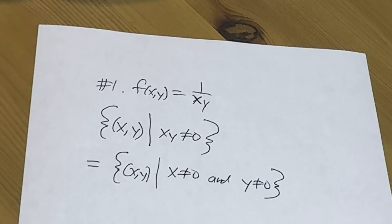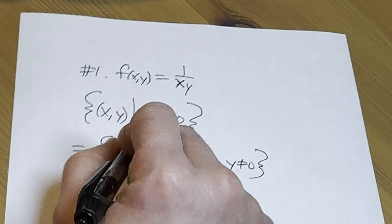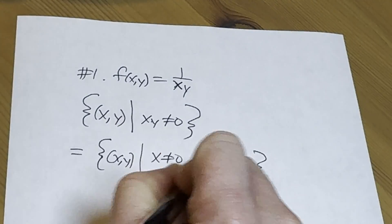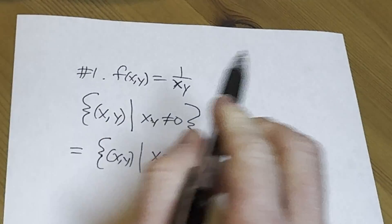These are equal sets, right? Let's be careful here. Because if x is not zero and y is not zero, that implies that xy is not zero, right? Because if they're both not zero, that's not zero. And if this is non-zero, that means that each factor is non-zero.